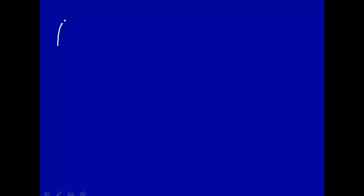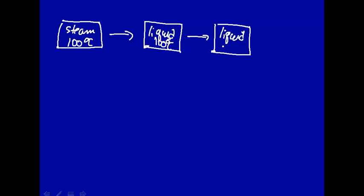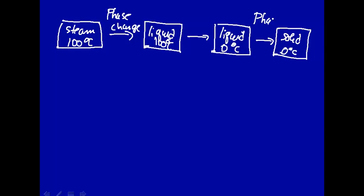So let's calculate the entropy changes for these. A picture is sometimes useful. We're going to start with steam at 100°C and condense that into a liquid at 100°C, then cool that liquid down to a liquid at 0°C, and finally change that liquid into a solid at 0°C. It looks like the first and third steps are phase changes, and we'll calculate delta S for each.